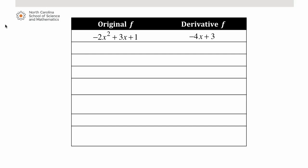Suppose the first function is negative 2x squared plus 3x plus 1. The derivative is negative 4x plus 3. The second function, x squared minus 6x plus 4, its derivative is 2x minus 6. So start trying to see if you can come up with how you get from the original function to the derivative by working with the coefficients and the exponents.